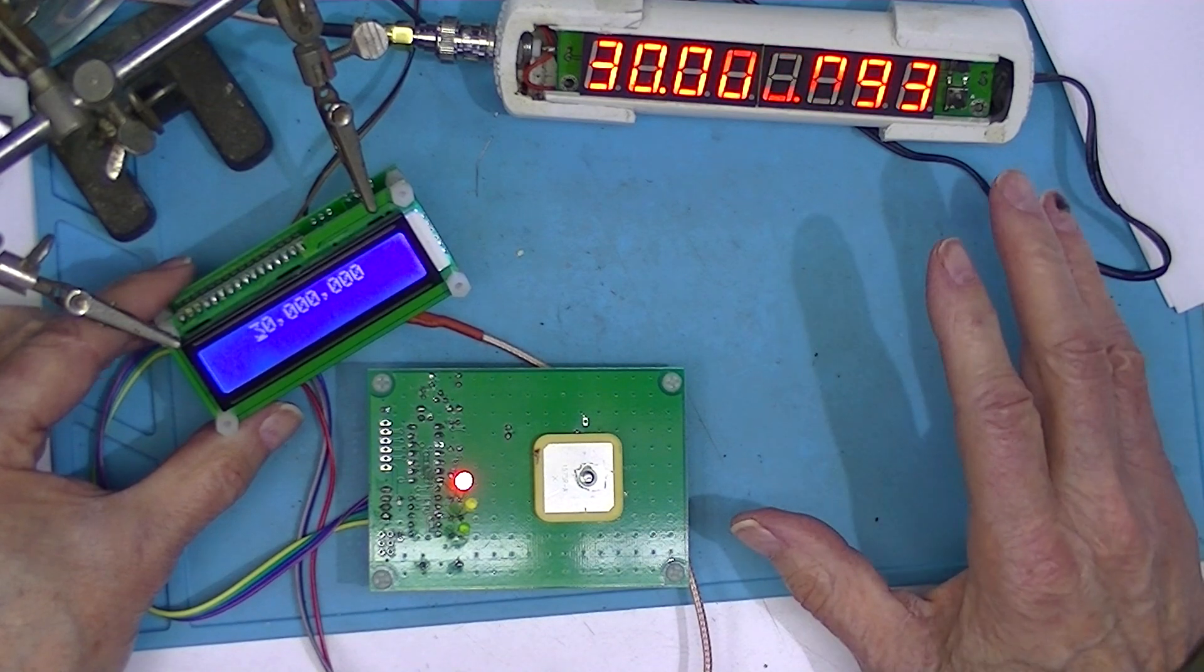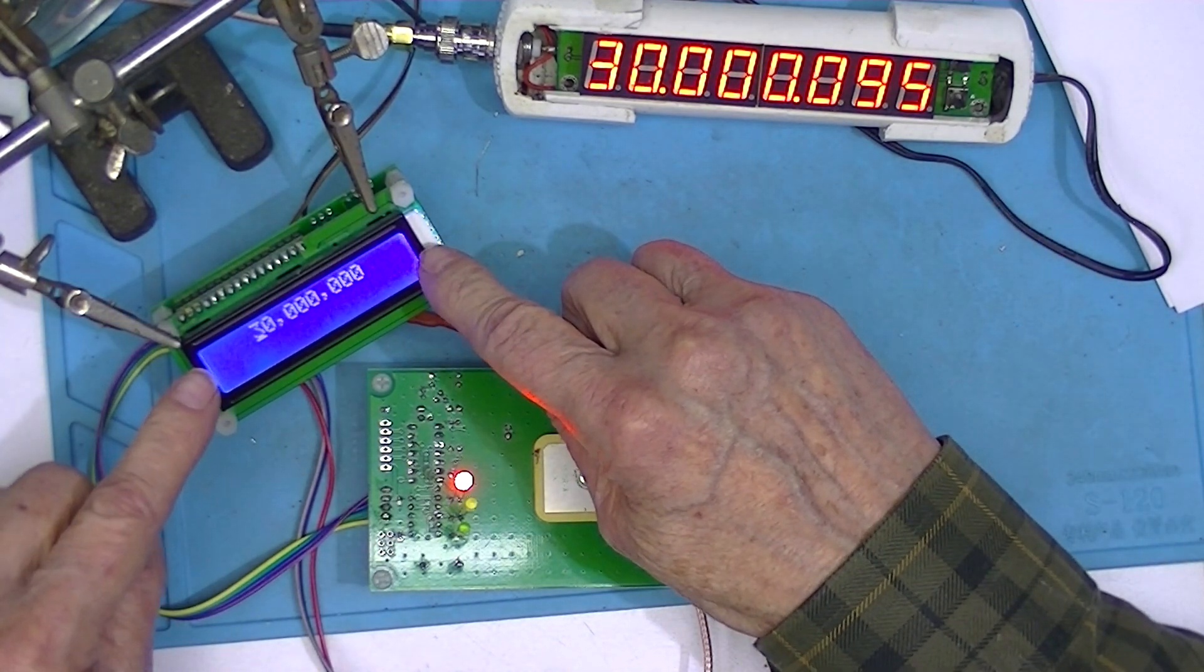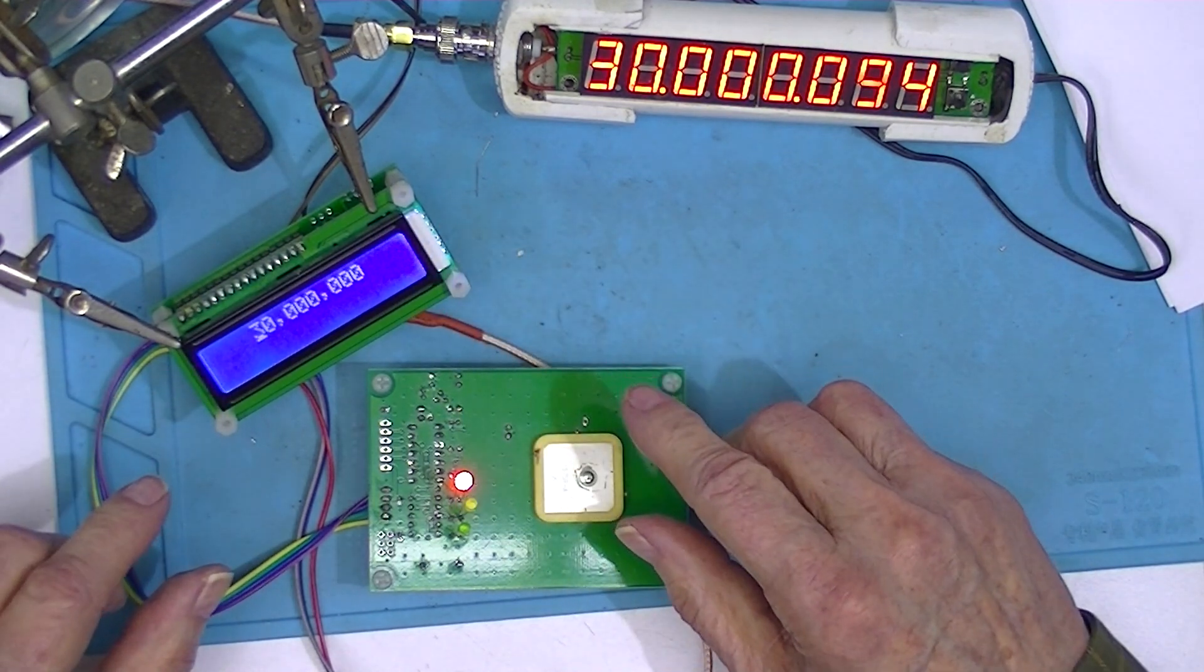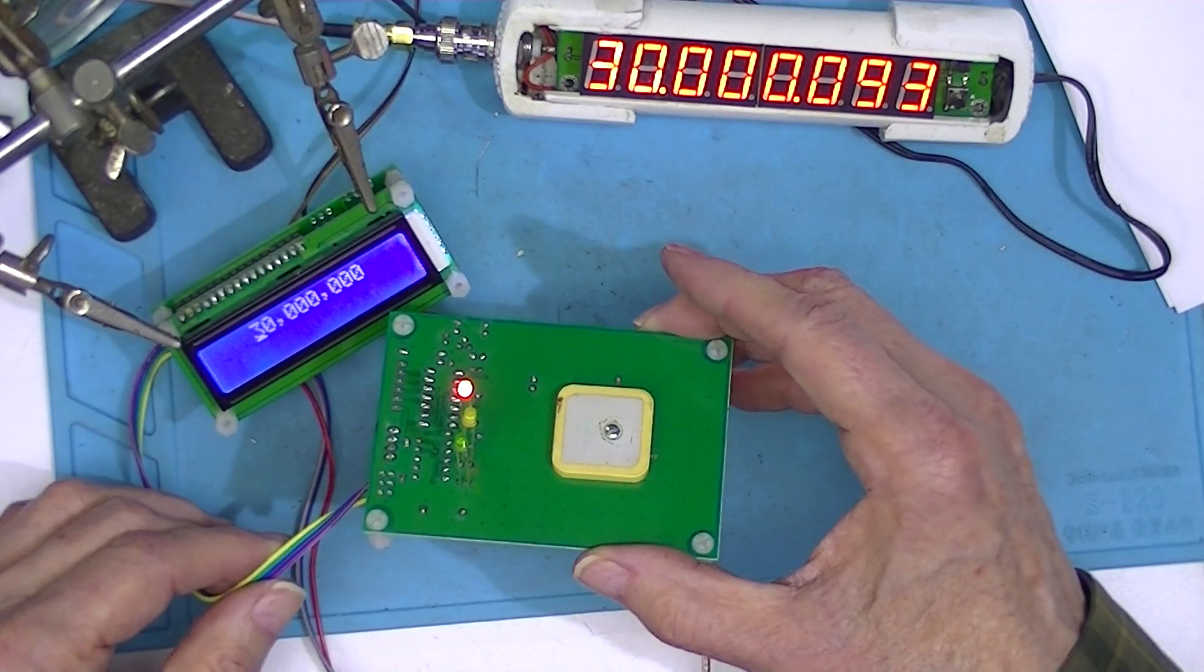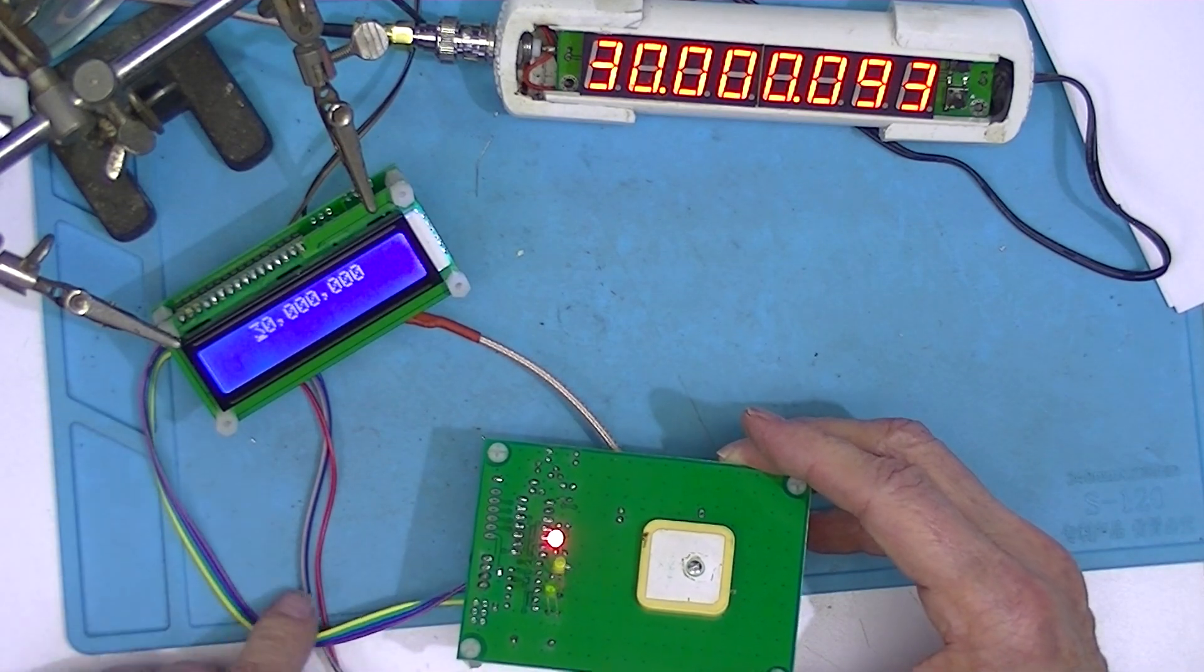At this point, all that's left is to put the signal generator in a case. I'll probably put the GPS receiver in a separate case and make a jumper to connect them.